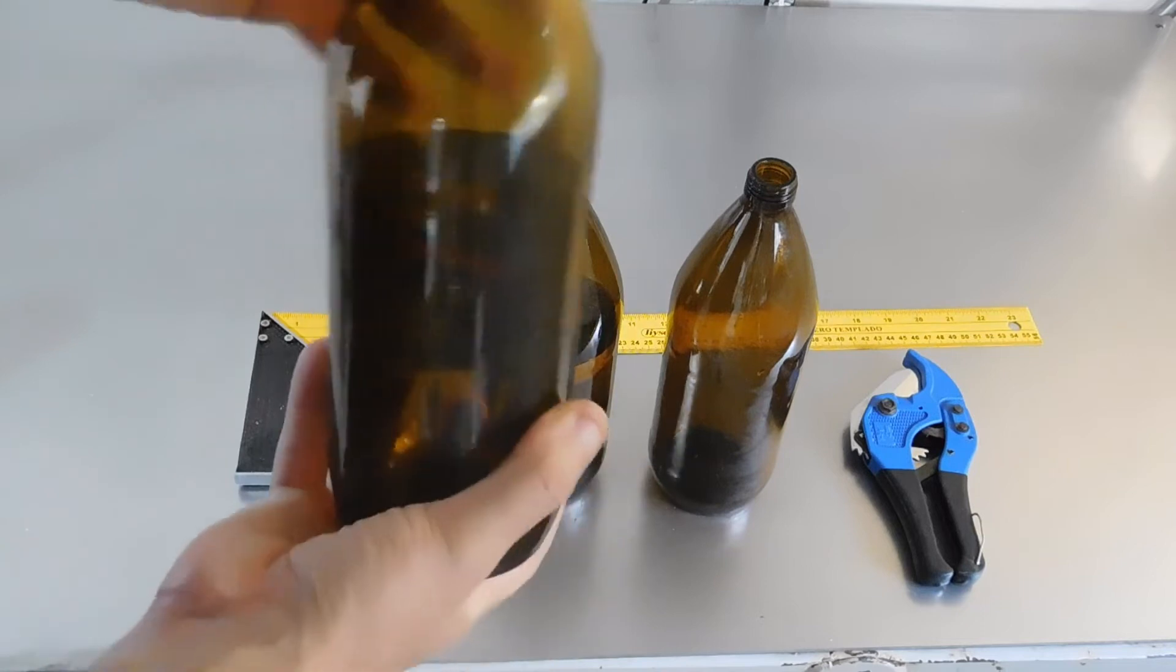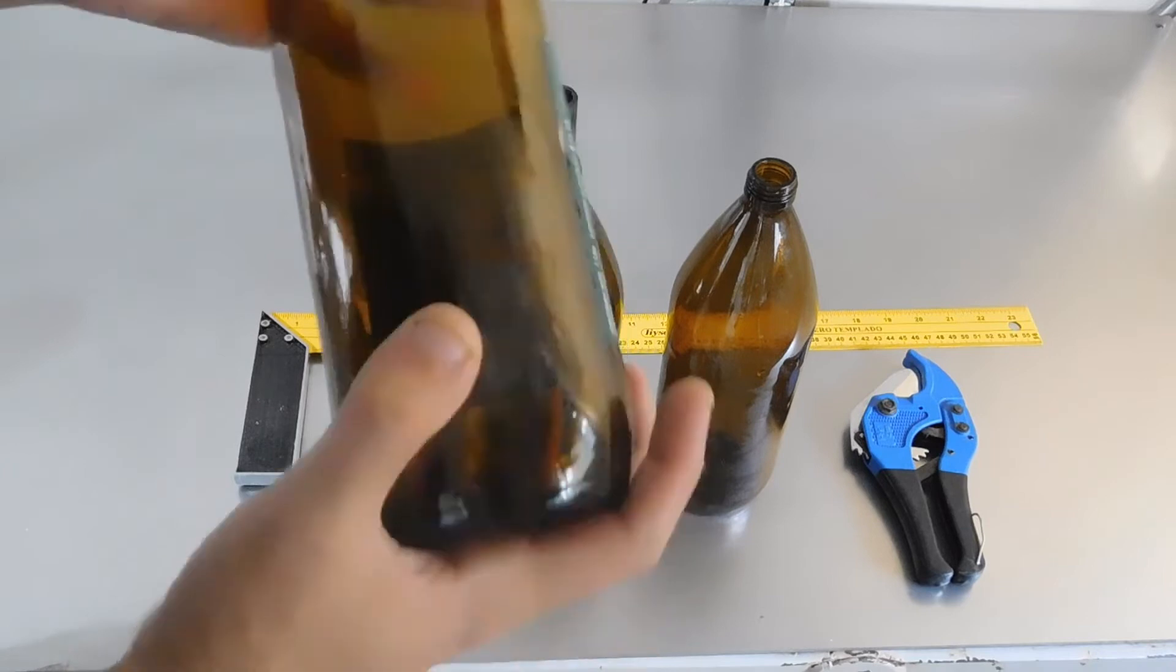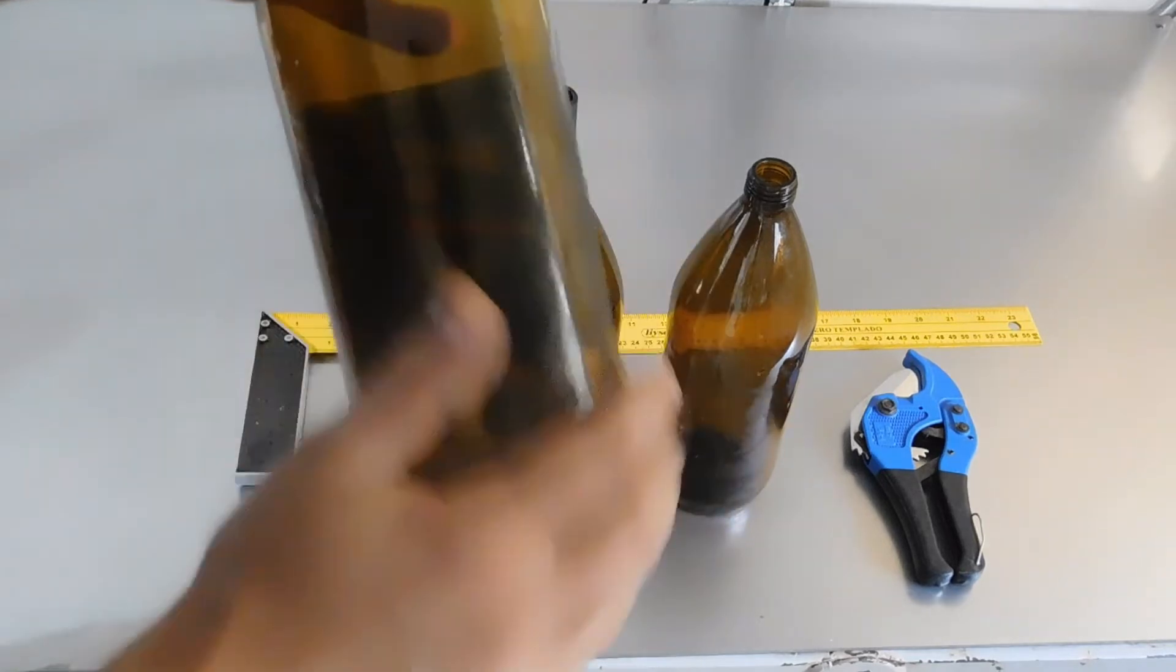Yo los quería sobre todo para cultivo microbiológico, porque son oscuros. Este envase medio oscuro protege a los microorganismos de la luz, que generalmente es letal para ellos, o les afecta bastante en el crecimiento.